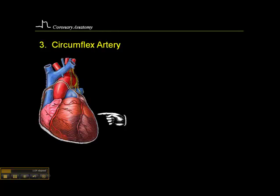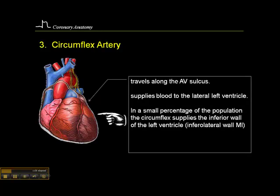The circumflex artery travels along the atrioventricular sulcus between the left atrium and the left ventricle, and it supplies blood to the lateral left ventricle. As a caveat, I indicated previously that the right coronary artery supplies the inferior wall of the left ventricle in most humans, but in a small percentage of the population, the circumflex artery supplies the inferior wall of the left ventricle.